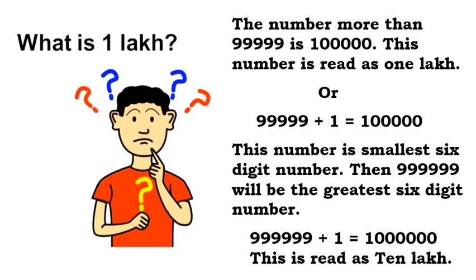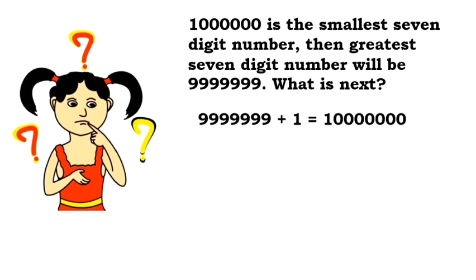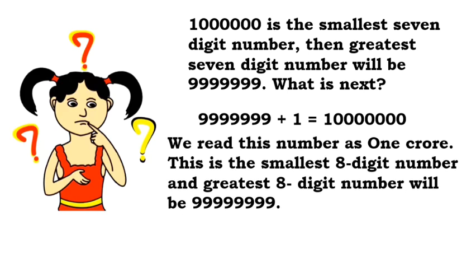Then what will be beyond 10 lakh? 10 lakh is the smallest 7 digit number. The greatest 7 digit number will be 99,99,999. And 99,99,999 plus 1 will give us 1 followed by 7 zeros. We read this number as 1 crore.